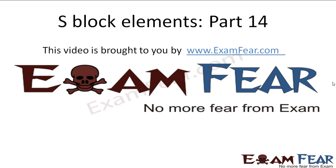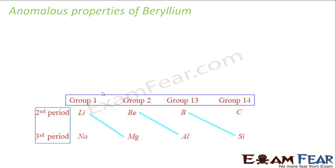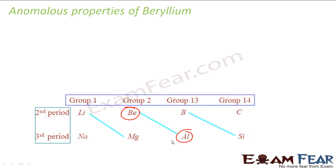Hello friends, this video on S-Block Elements part 14 is brought to you by examfier.com. As we have seen in the case of lithium and magnesium, lithium has different properties than the group one elements. Similarly, beryllium also has different properties from group two elements and has properties similar to aluminium. We have seen this pattern for lithium and magnesium in past videos.